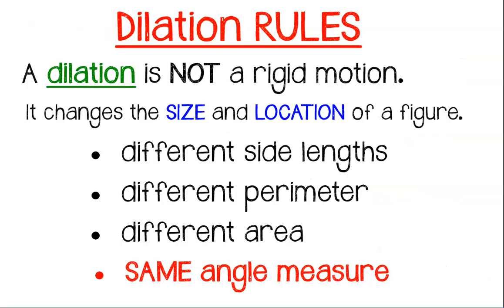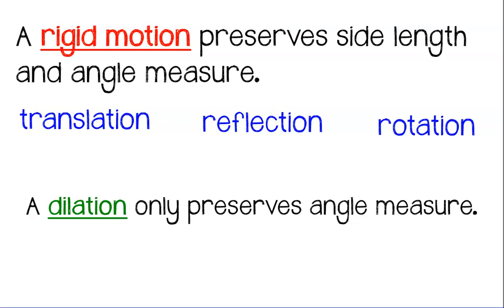Remember, a dilation is not a rigid motion. It changed the size and the location of a figure. So you're going to have different side lengths, you're going to have a different perimeter, you're going to have a different area, but you will have the same angle measures. So remember that rule. Translation, reflection, rotation, which we studied in previous videos, are rigid motions. They have same side lengths, same angle measures, same perimeter, same area. A dilation only preserves angle measure.